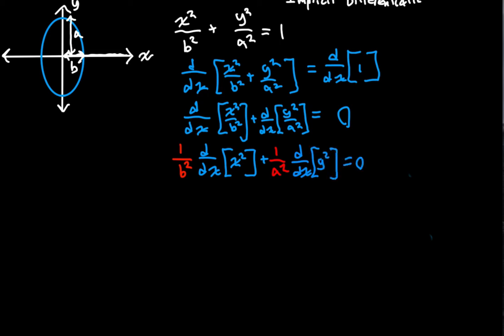And that's all equal to zero. So the derivative with respect to X squared here is pretty easy. That's just going to be 2X times 1 over B squared.